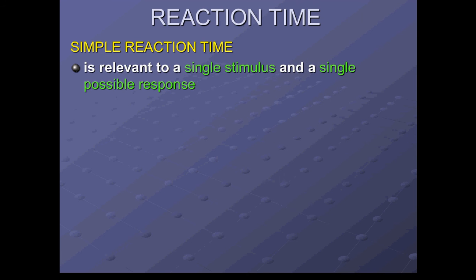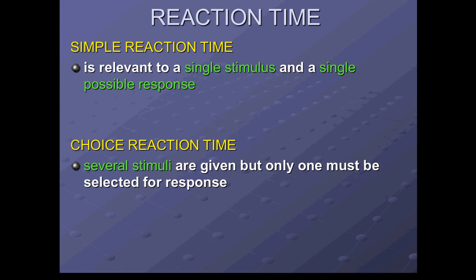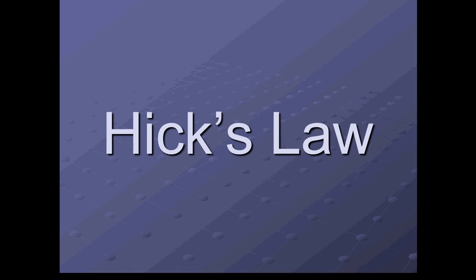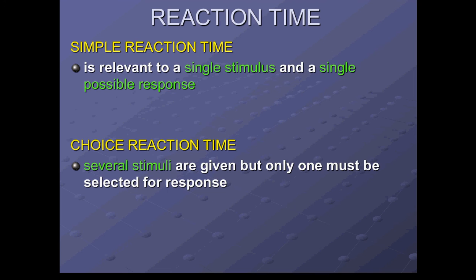There are different types of reaction time. We have simple reaction time when we've got a single stimulus and a single possible response. We've got choice reaction time, whereby several stimuli are given, but only one must be selected to respond to. The more choices a person has, the more information needs processing. And the longer it takes to process the information, the slower the reaction time. And this is Hick's law.